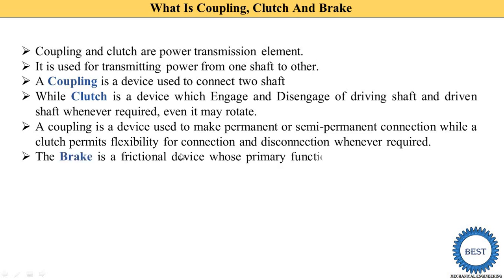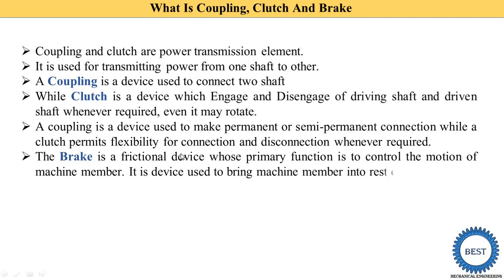The third component is the brake. In our vehicles, we use the brake either to reduce the speed of the vehicle or to stop it completely. It works on the principle of friction, which is why it is called a frictional device. Its primary function is to control the motion of machine members. Any machine that has a rotating part uses the brake to reduce speed or stop. A brake is a device used to bring machine members to rest or to slow them down.